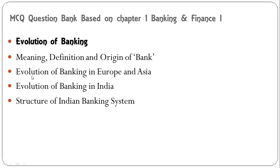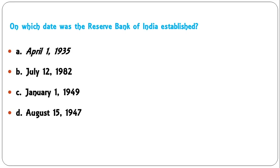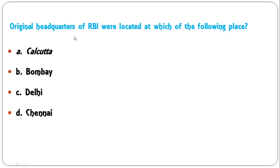These are the topics of the first chapter of banking and finance. The first question is: on which date was the Reserve Bank of India established? Options are April 1st 1935, July 12 1982, January 1st 1949, August 15 1947. The correct answer is April 1st 1935, so A is the correct answer.